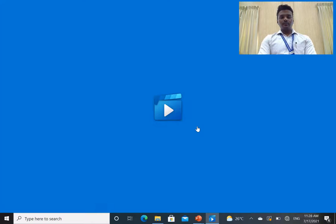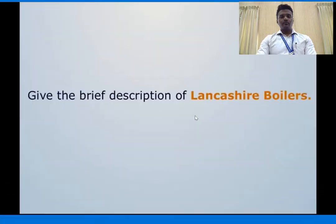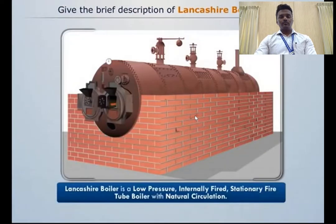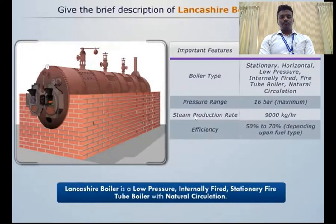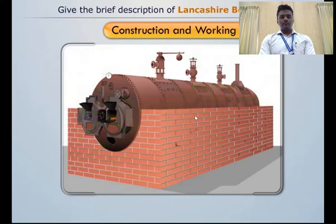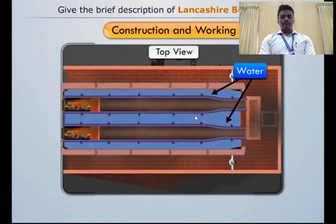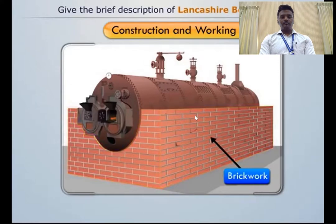Lancashire boiler is a low-pressure, internally fired, stationary fire tube boiler with natural circulation. Its pressure range, steam production rate, and efficiency are notable. Lancashire boiler consists of a horizontal cylindrical shell filled with water surrounding two large fire tubes. The cylindrical shell is placed over brickwork, which creates several channels for the flow of hot flue gases.